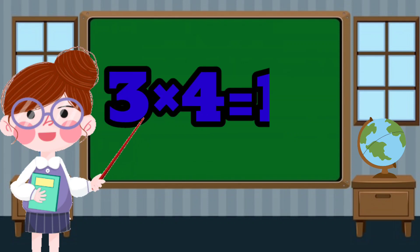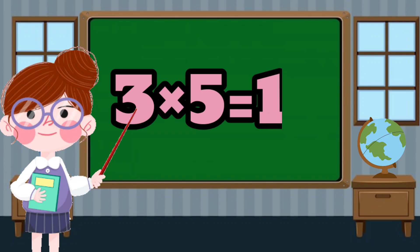3 times 4 equals 12. 3 times 5 equals 15.